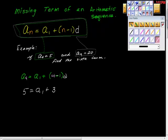So we have 5 equals the first term plus 4 minus 1 is 3, and 3 times d is 3d. So this is our first equation.